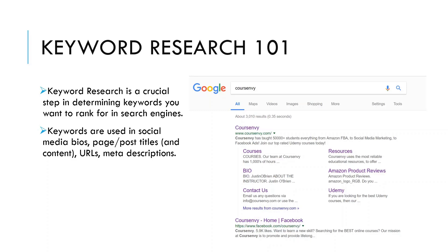YouTube video descriptions, social media posts, and on and on. So when a client tells me they never did keyword research before creating their social media bios, I shake my head. Why do all this work to then not even be found organically in Google search?